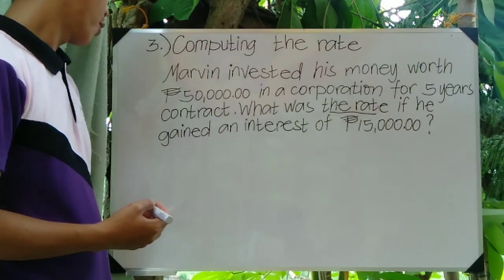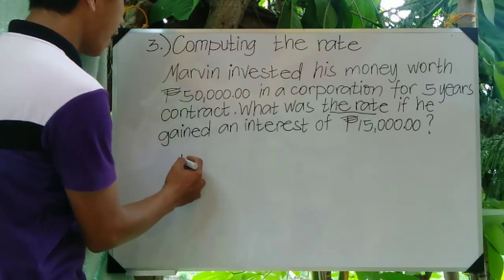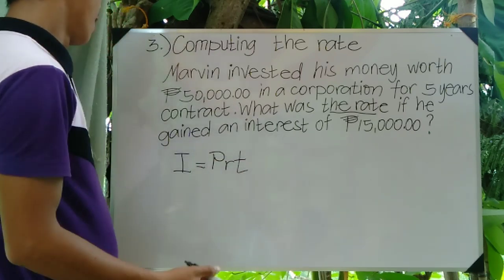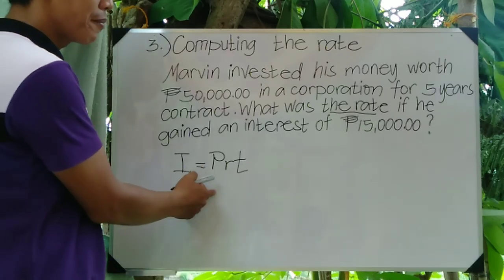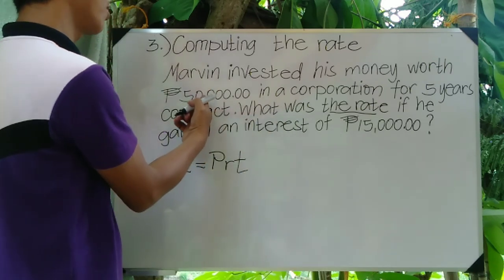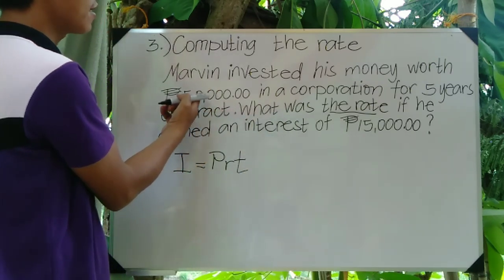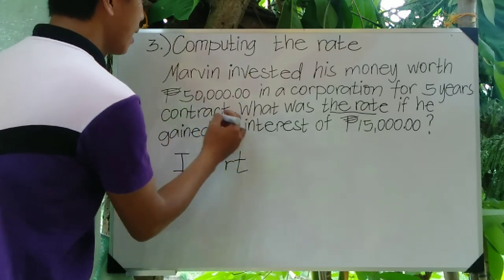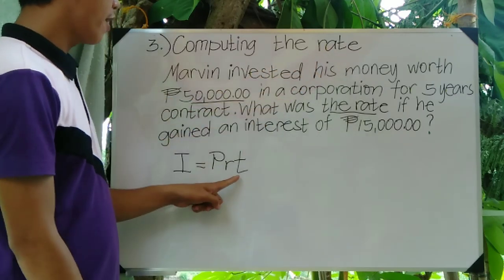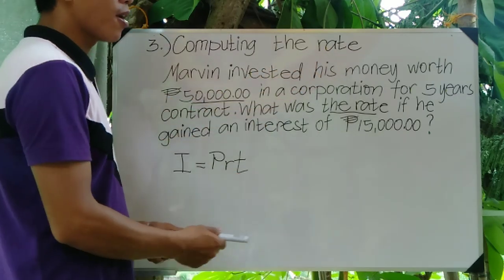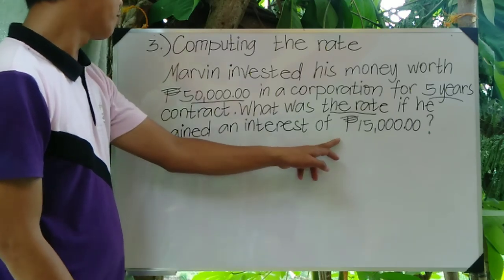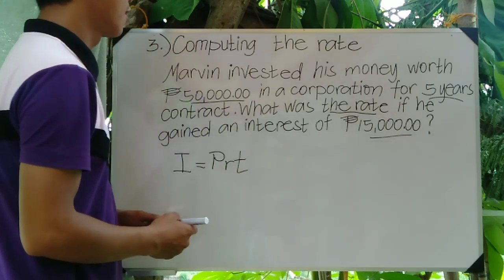We will use the same formula: I equals P times R times T. Before solving, identify the given: 50,000 pesos is our principal amount; the rate is what we need to find; the time is 5 years as mentioned in the problem; and the interest is 15,000 pesos.